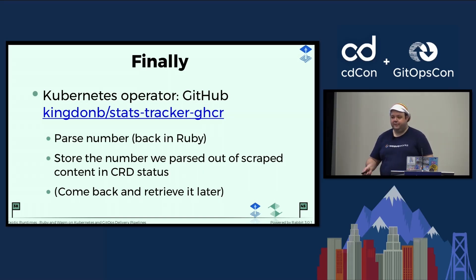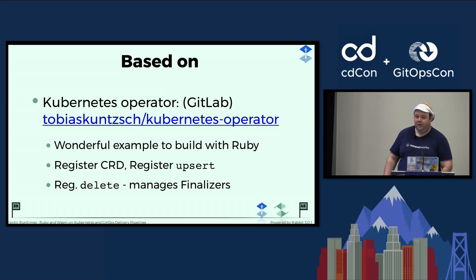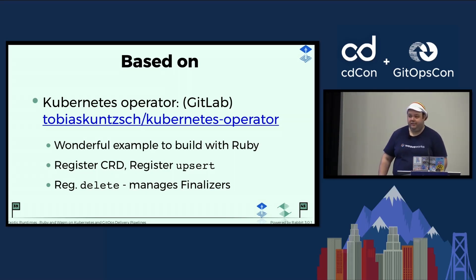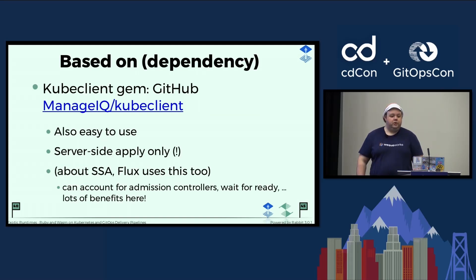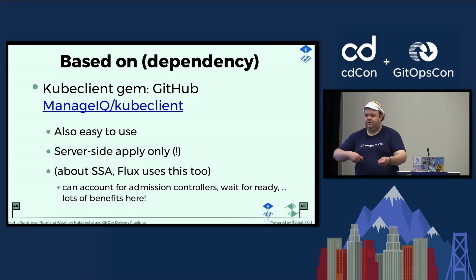Once we parse the number, since this is a Kubernetes operator, we store the number in the status field of the CRD. There's a CRD — if you go through this example you'll find out about that — and we retrieve that data later from the CRD status. Writing an operator in Ruby is actually super easy. This is the gem; it has a wonderful example about one page long. If you've ever tried to learn controller-runtime, it's quite a bit longer. It's based on a library called kubeclient, which is well maintained and has server-side apply — which is great, and Flux uses server-side apply too.